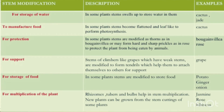Third modification: For protection. In some plants, the stems are modified as thorns, as in Bougainvillea, or may form hard and sharp prickles, as in Rose, to protect the plants from being eaten by animals. Examples: Bougainvillea, Rose.